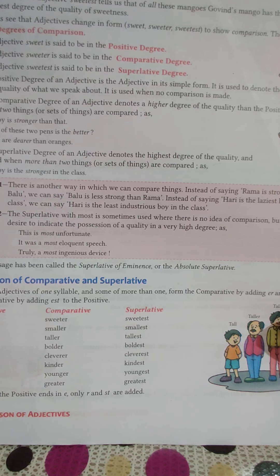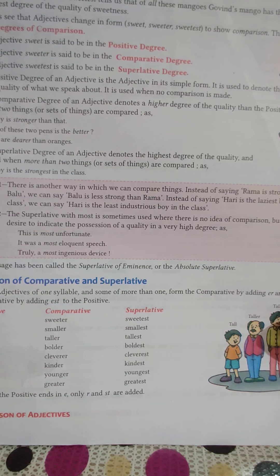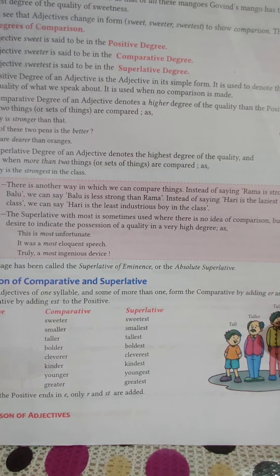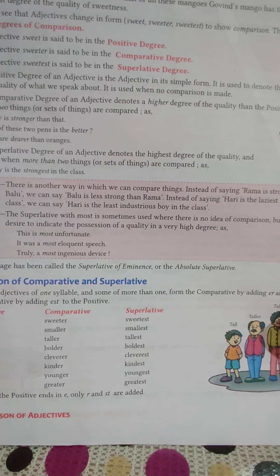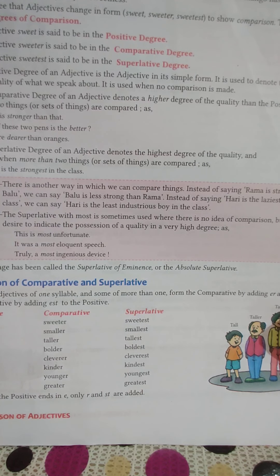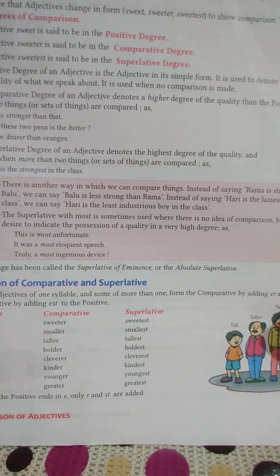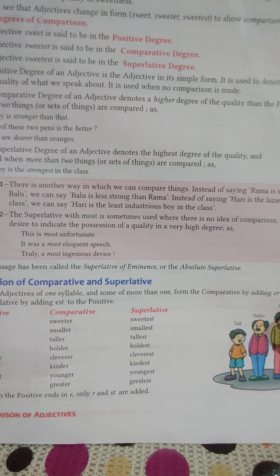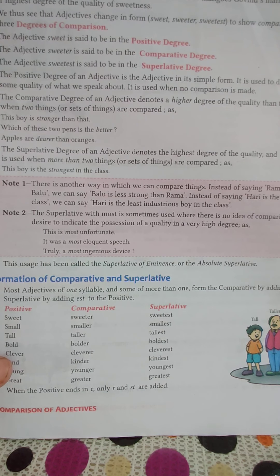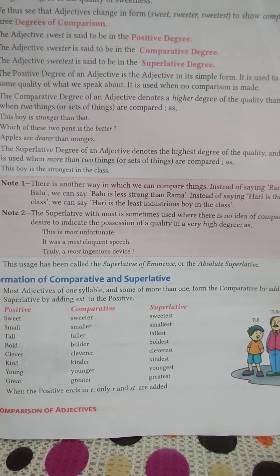The superlative degree of an adjective denotes the highest degree of quality, and is used when more than two things or sets of things are compared. For example: 'This boy is the strongest in the class' — among many boys in the class, he is the strongest.